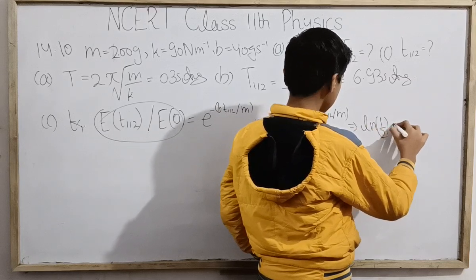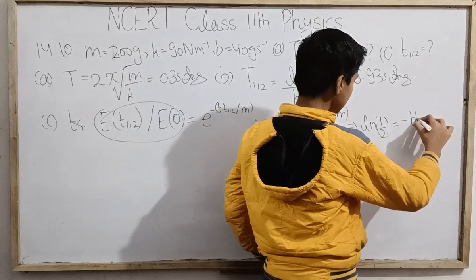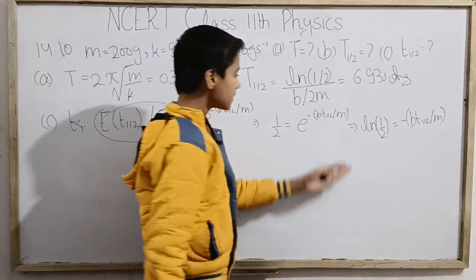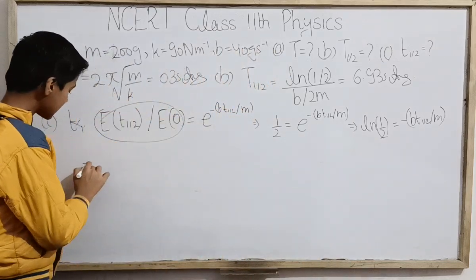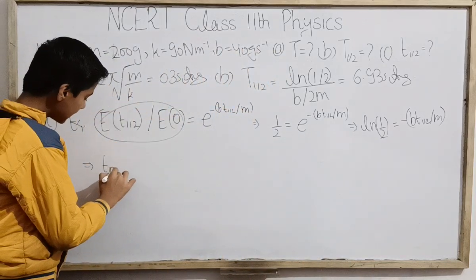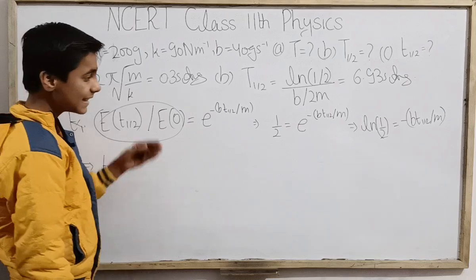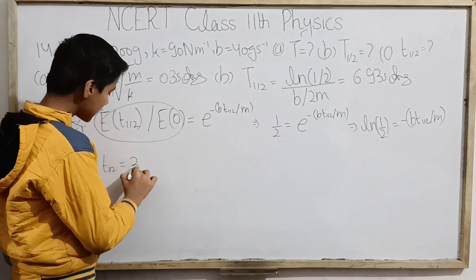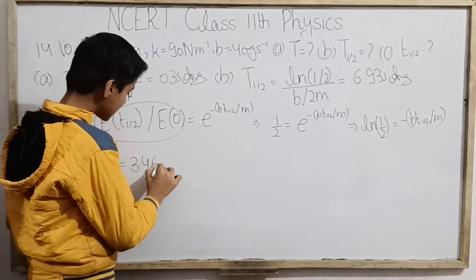Solving for t, we get the value such that total mechanical energy drops to half of its initial value, and that comes out to be 3.46 seconds.